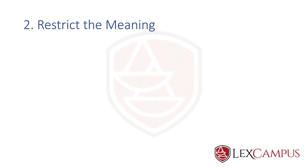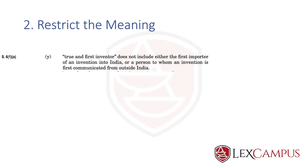The second use of definition is to restrict the meaning. Section 2(1)(y) — 'true and first inventor does not include' — restricts the definition by specifying who is excluded: the first importer is not included, and neither is a person to whom the invention is first communicated from outside India. So this is the second use of definition: to restrict the meaning.